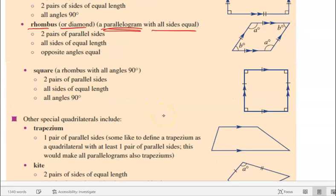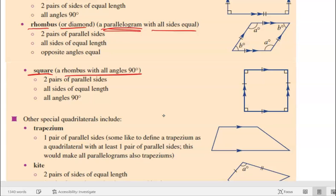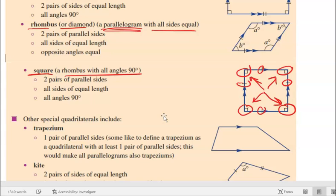It just keeps getting better! A square is a rhombus, but it has those 90-degree angles like a rectangle does. All sides are equal in length like a rhombus, and all angles are equal — it's still true that opposite angles equal each other, they're just all 90 degrees. That's a parallelogram with the special name: square.